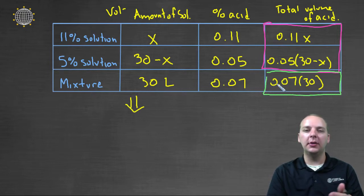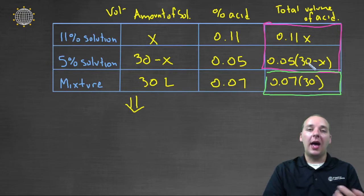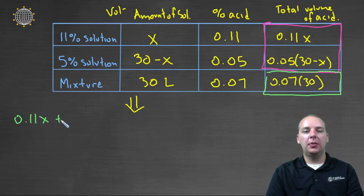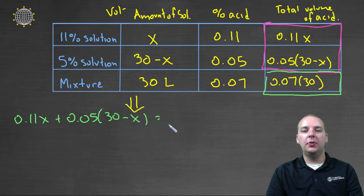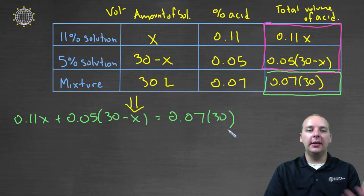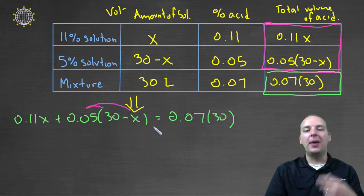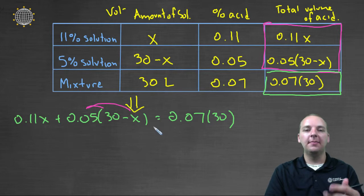That's pretty intuitive: the acid from the eleven percent solution plus the acid from the five percent solution, as they're mixed, equals the acid in the thirty-liter mixture. So we set up the equation: 0.11x + 0.05(30 − x) = 0.07 × 30. This is a linear equation with one variable. We'll simplify both sides, combine like terms, and solve for x.